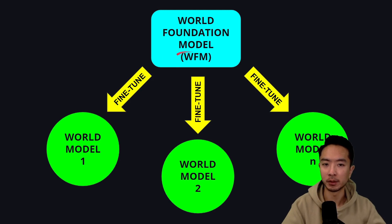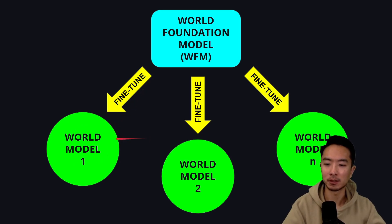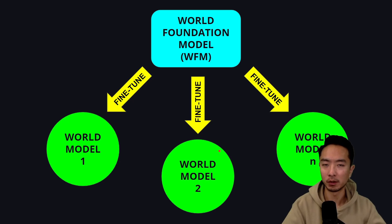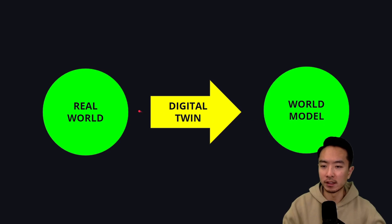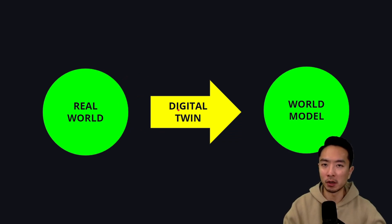You'll often see the acronym WFM to represent World Foundation Model. You can generate your own world models by fine-tuning them — World Model 1, World Model 2, World Model N — creating as many as you want for the specific use case you need. You can think of these world models as a digital twin of your real world, where you can run experiments and test cases without actually running your robot or car in the real world, while still gathering data.